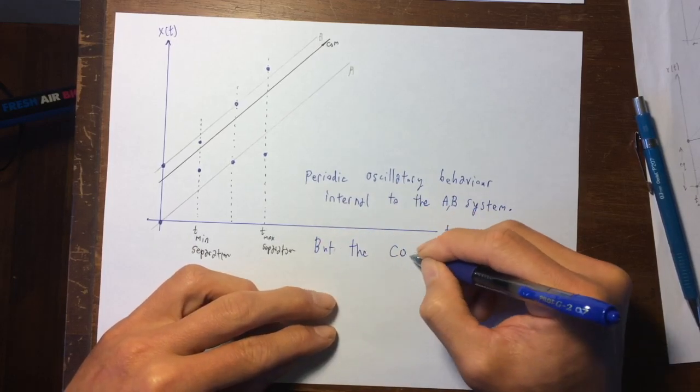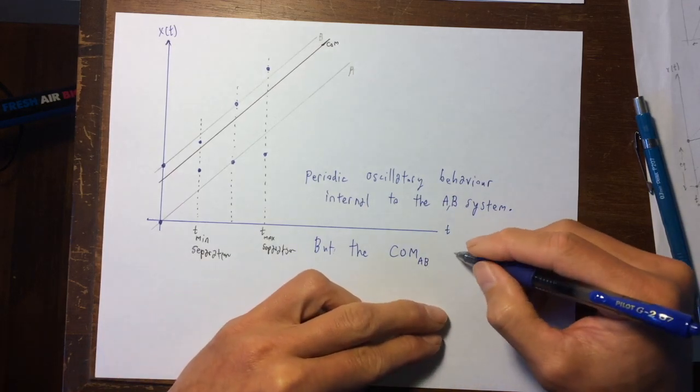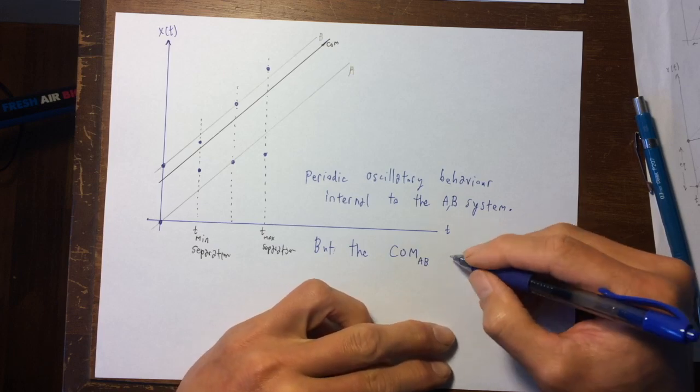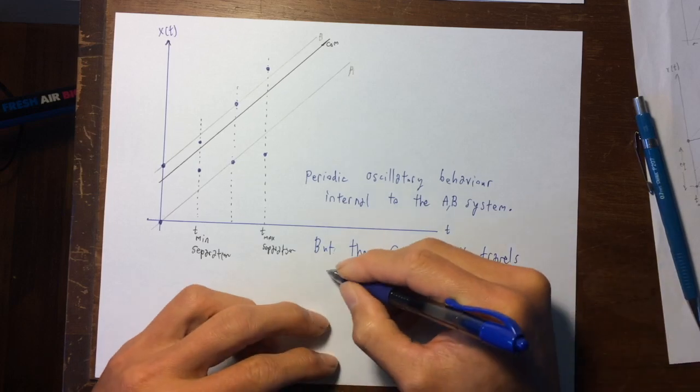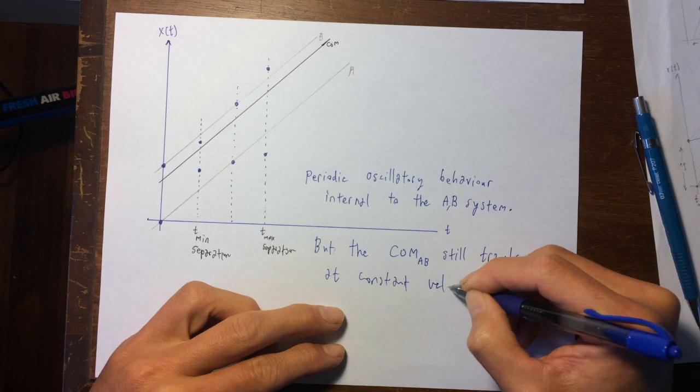The center of mass of the AB system doesn't do anything interesting. The center of mass of the AB system actually still travels at constant velocity.